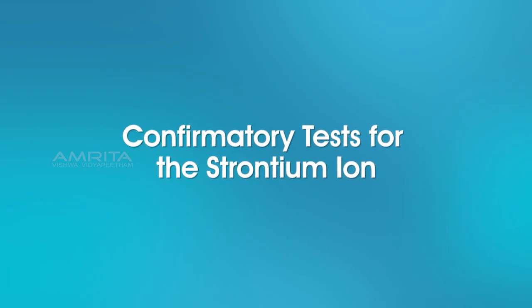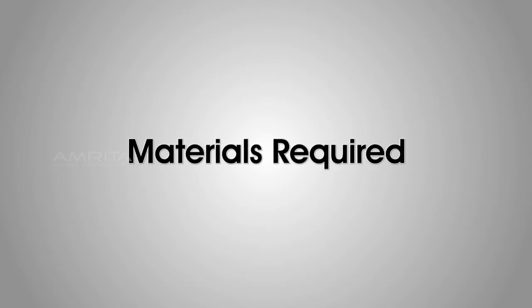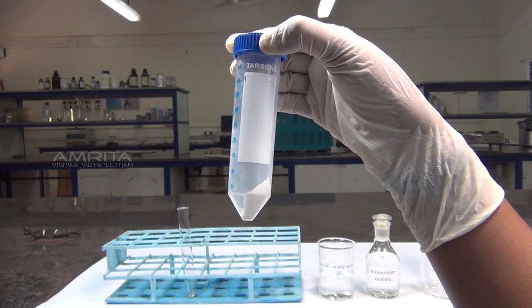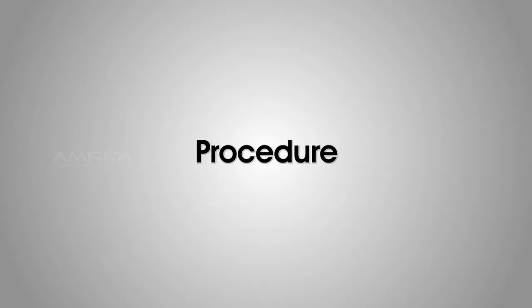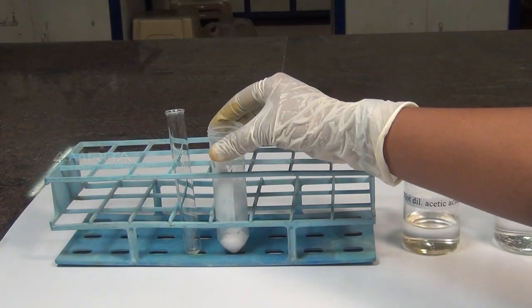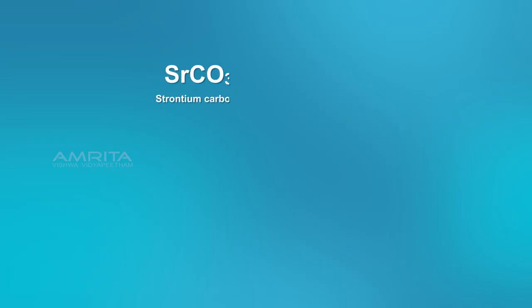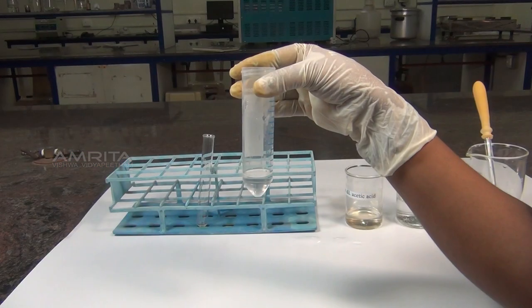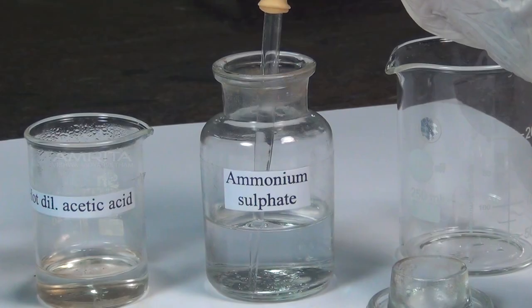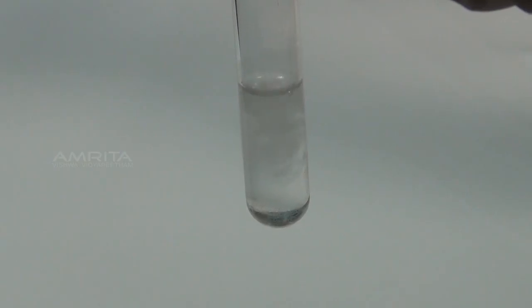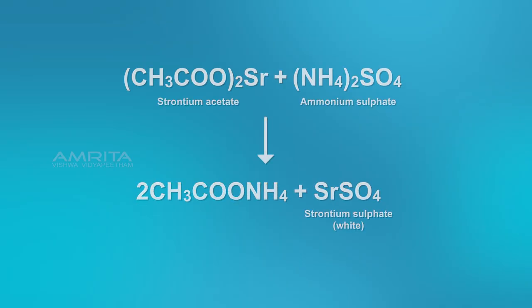We look at the confirmatory tests for the strontium ion. Ammonium Sulphate Test. Materials required: precipitate obtained in the group analysis, hot dilute acetic acid, ammonium sulphate solution and droppers. Procedure: take the precipitate obtained in the group analysis. Add a small quantity of hot dilute acetic acid using a dropper. Strontium carbonate reacts with acetic acid to form soluble strontium acetate. Transfer this solution into a test tube. Using another dropper, add a small quantity of ammonium sulphate solution. Strontium acetate reacts with ammonium sulphate to form a white precipitate of strontium sulphate.